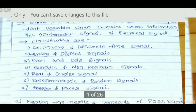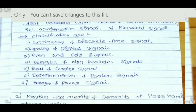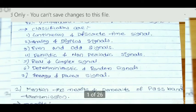Continuous signals are continuously varying with time. Discrete signals have fixed values: one or zero. Analog signals are continuously varying with time. Digital signals have specific values: one or zero. Even and odd functions include sine wave and cosine wave. Real and complex signals have real and imaginary terms. Deterministic signals have fixed values; random signals may change their values. Energy and power — power is determined by P equal to I squared R, expressed in watts.